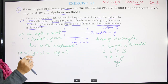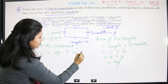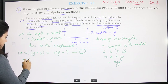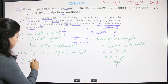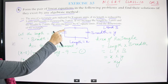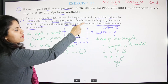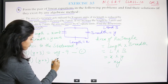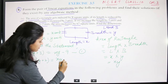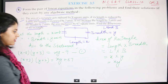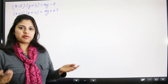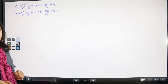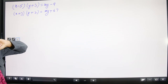The second condition: if we increase the length by three units, that is (x + 3), and breadth by two units, that is (y + 2), the area increases by 67. So Equation 2 is: (x + 3)(y + 2) = xy + 67.